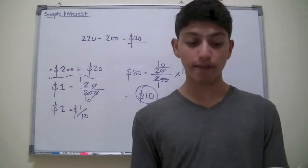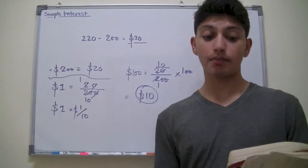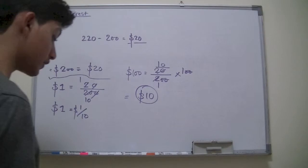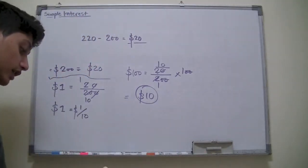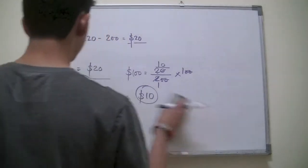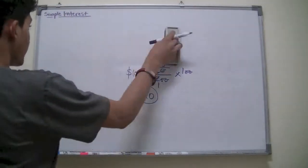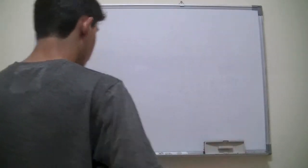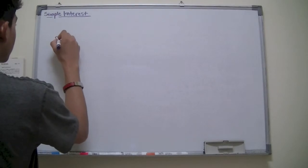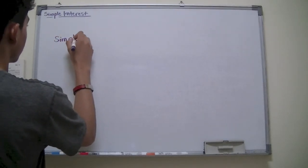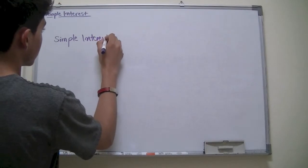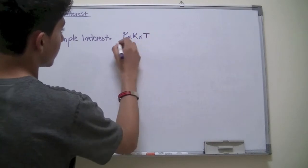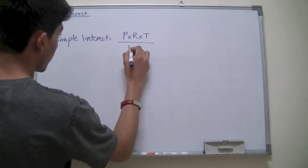The money lent is known as principal, and interest if calculated on basic money only is known as simple interest. For example, every year the interest will be calculated on $200. The generalized formula for simple interest is PRT over 100. You have price times rate times time over 100.